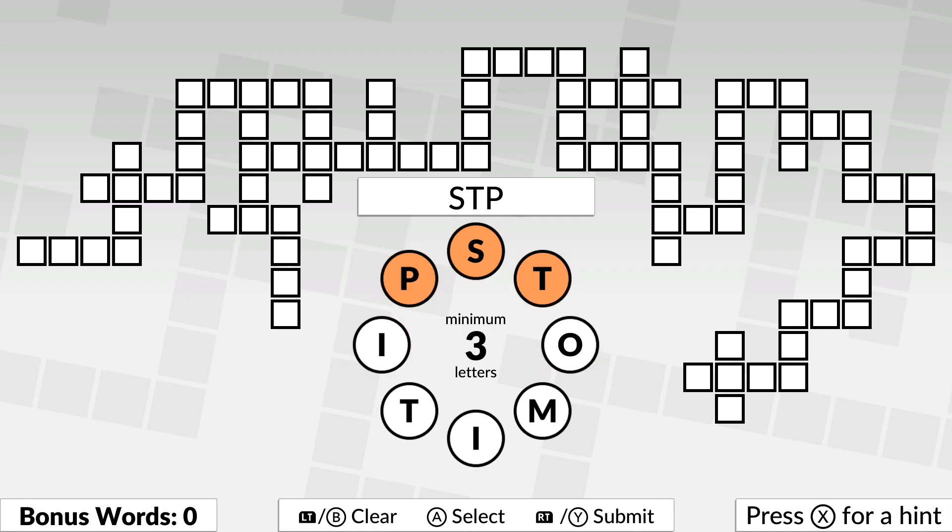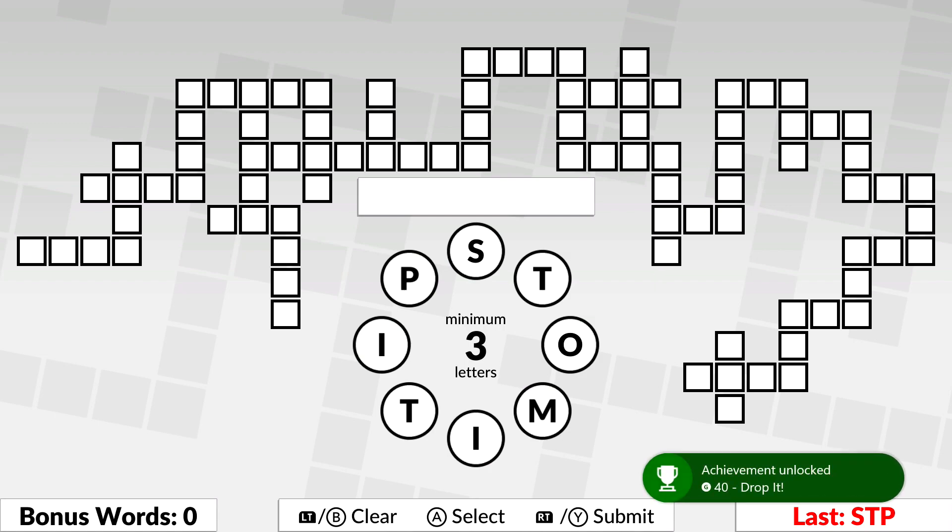Just put whatever you put in again. So we're going to put STP in one more time and that should give us this achievement called Drop It for 40 gamer score.